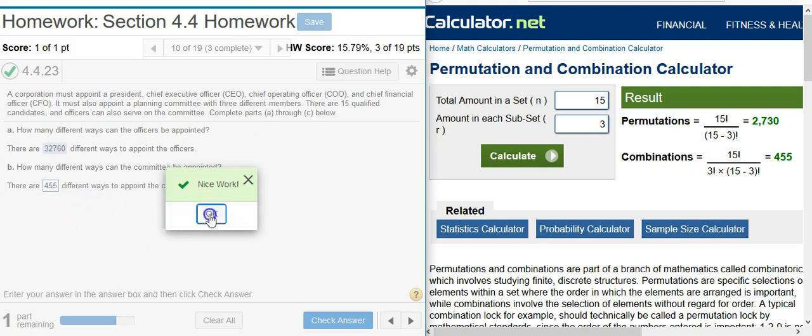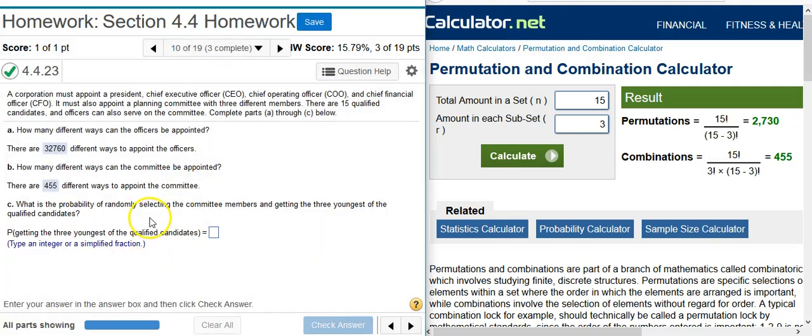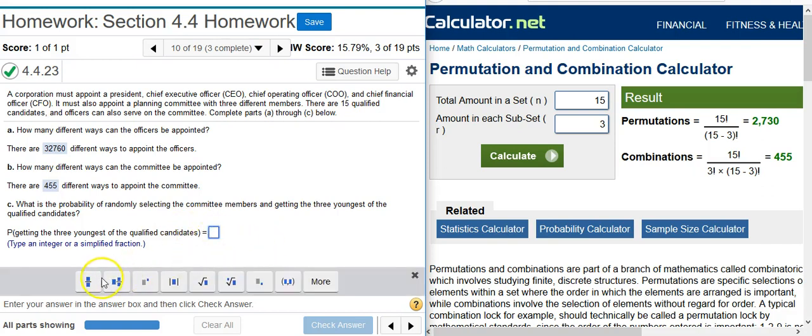Nice work! And finally, Part C asks, what is the probability of randomly selecting the committee members and getting the three youngest of the qualified candidates? Okay, well, the probability is going to be the part over the whole. So I'll stick a fraction in here.